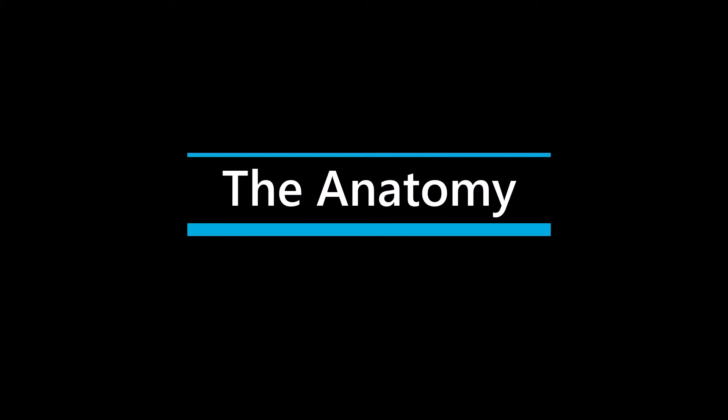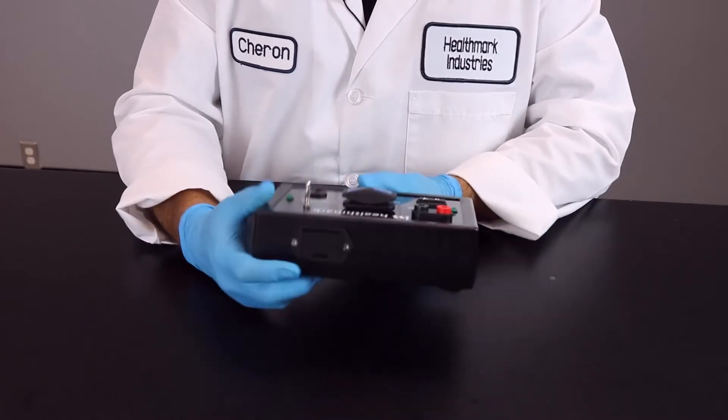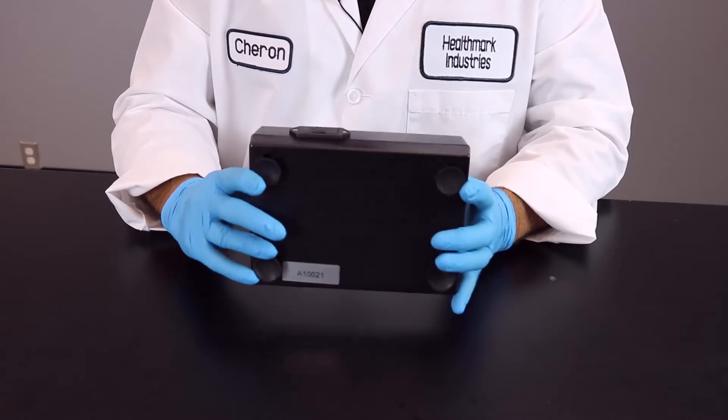Let's go over some basic anatomy of the continuity tester. You'll notice in the back it takes a 9-volt battery located here. It has suction cups to be able to secure it to your workstation.